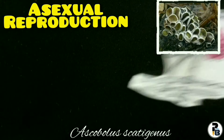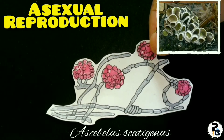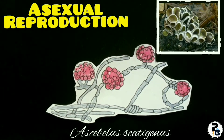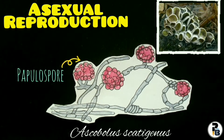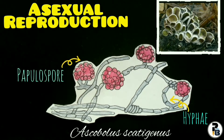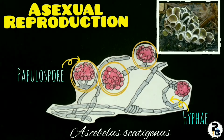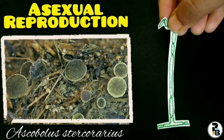formation of some specialized sclerotium-like asexual reproductive structures called papillus pores takes place, which consist of one or two large central storage cells surrounded by a covering of hyphae, which later form blister-like outgrowths. This pore never gives rise to ascocarps,